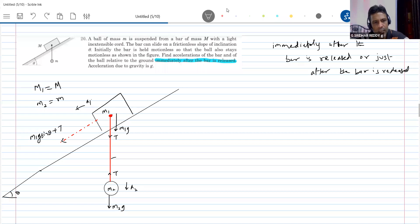And what is the state of the string? String will be taut and it is inextensible. I'm going to use this condition to solve this one.